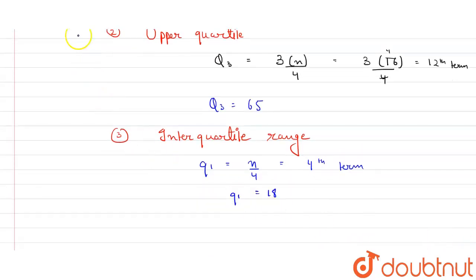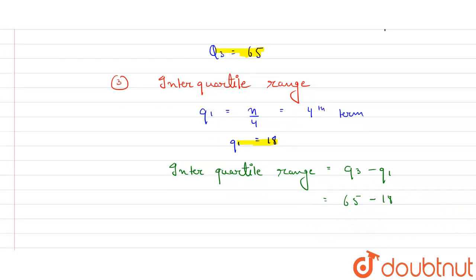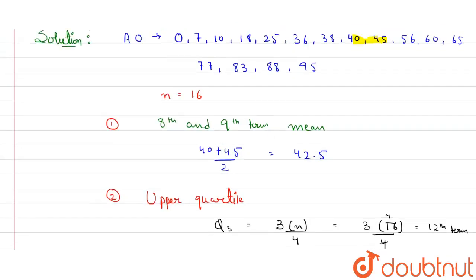Now we are having value of upper quartile 65 and lower quartile 18, so we can find interquartile. Interquartile range equals Q3 minus Q1. What is the value of Q3? We calculated it is 65 minus Q1 value, it is 18. So 65 minus 18 will be 47. So we found all the values: interquartile range value is 47, upper quartile is 65, and median is 42.5 for this given data.